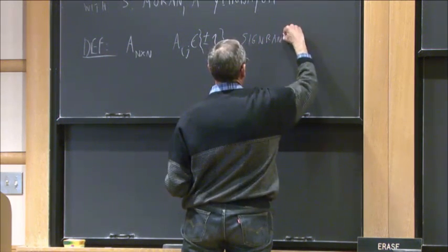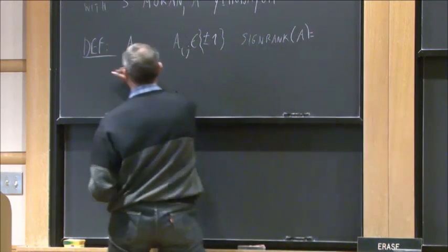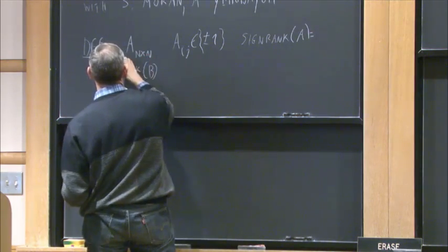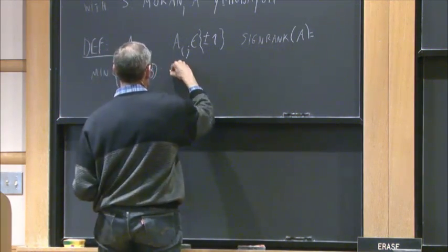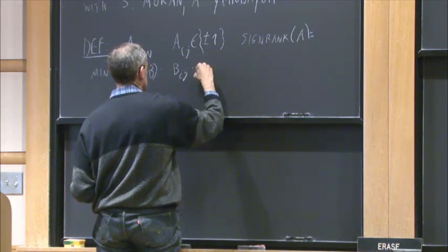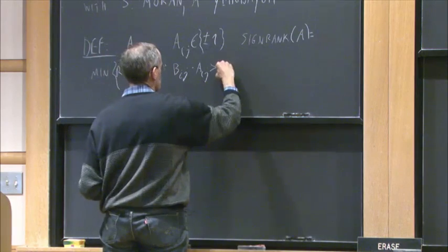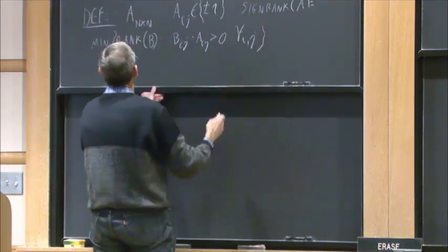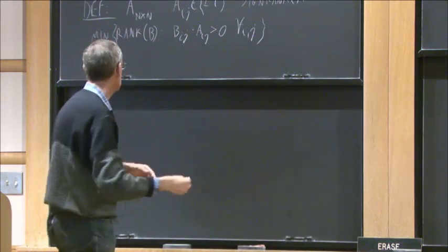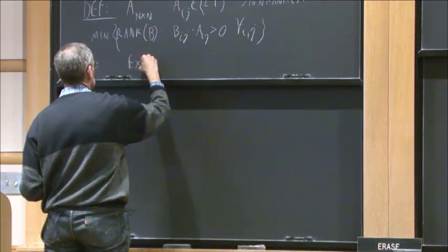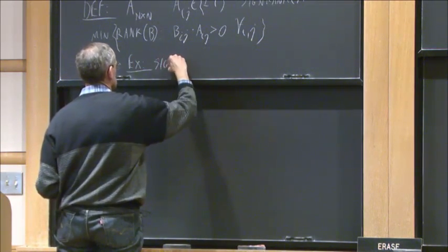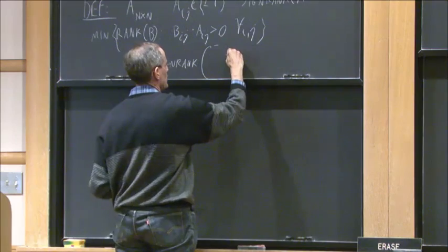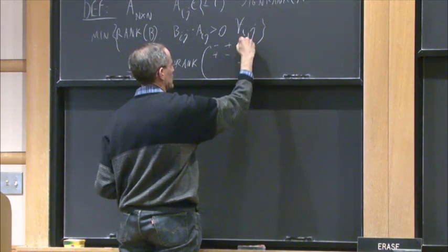The Sign Rank of A is the minimum of the rank of B over all matrices B, where B_ij times A_ij is positive for all i, j. Let me show you one example. Here is an example: I want the Sign Rank of something that looks like the identity — put minuses on the diagonal and plus everywhere else.